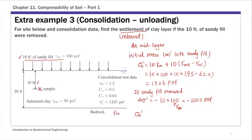The final effective stress sigma-f-prime equals sigma-naught-prime plus delta-sigma-prime. That's 1326 plus negative 1000, so sigma-f-prime equals 326 psf.